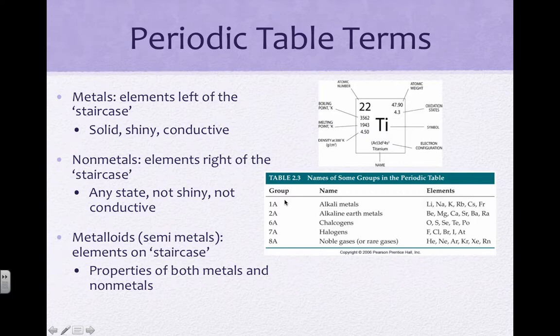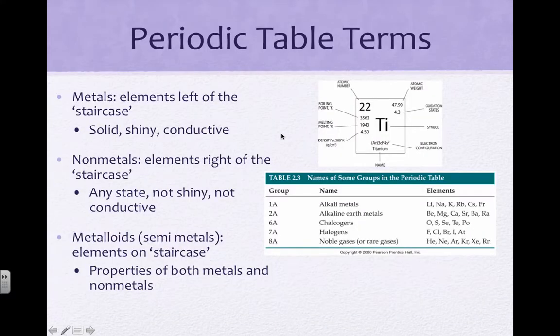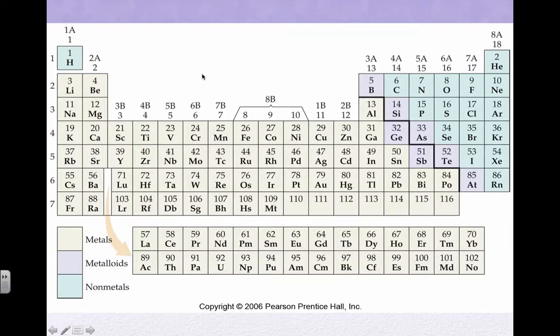Within the periodic table, there are some special names for groups. Group 1A, if you see this first column here, are the alkali metals. The alkali metals are the most reactive metals on the table. The alkaline earth metals are the second most, and they're in group 2A.